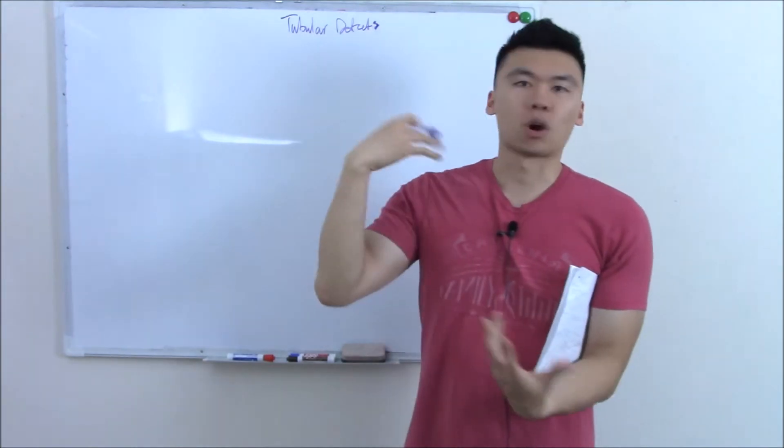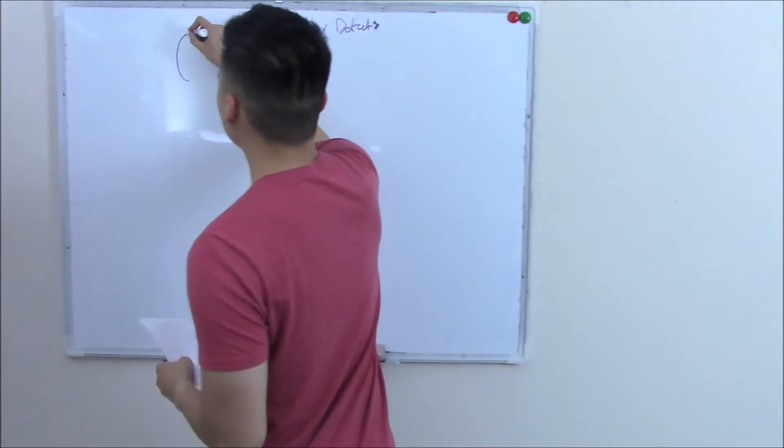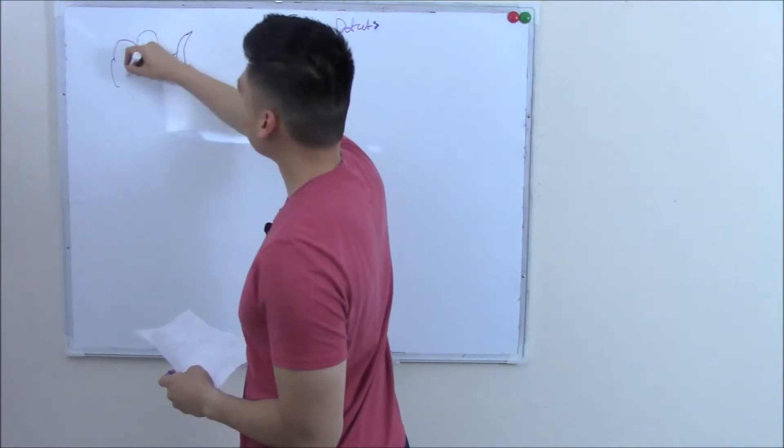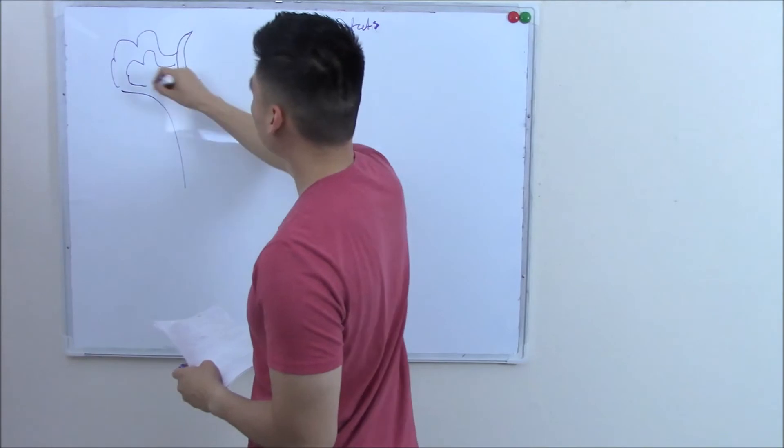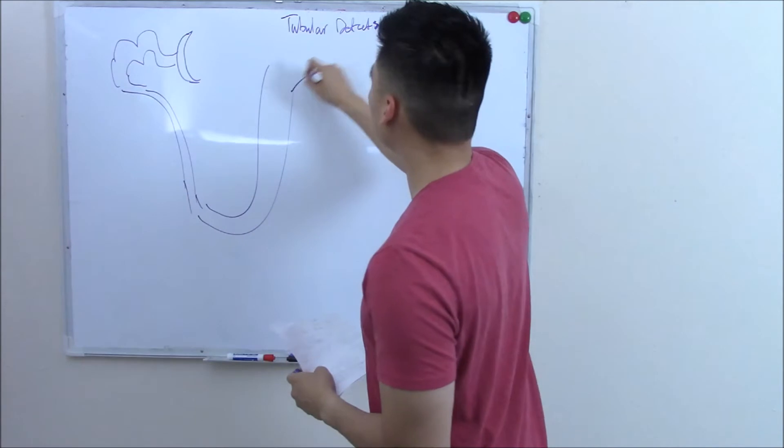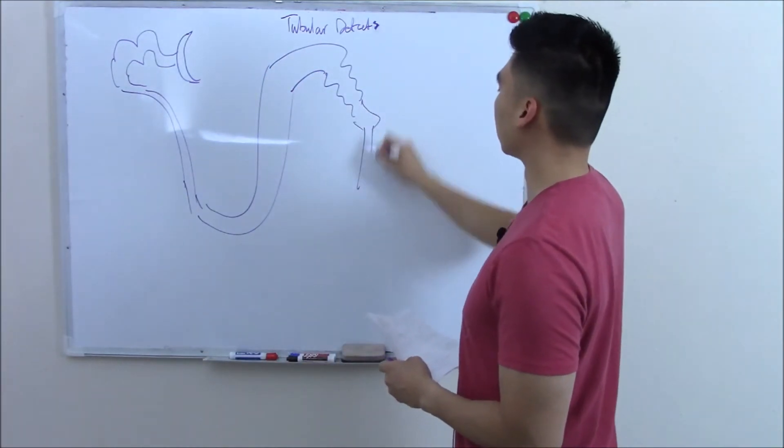As always, let's draw out the normal nephron first. The more you draw it out, the more it becomes second nature. So you have your Bowman's capsule, your proximal convoluted tubule, then descending, thick ascending, distal convoluted tubule, and your collecting duct.